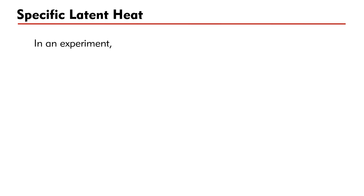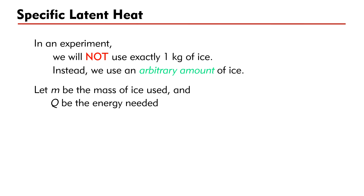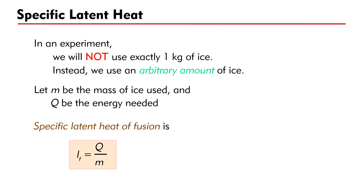In an experiment to find the specific latent heat of fusion of ice, we will not use exactly 1 kilogram of ice. Instead we shall use an arbitrary amount — let's say m kilograms of ice. If the energy needed to melt this m kilograms of ice is Q, then the specific latent heat of fusion is L_F equal to Q divided by m.